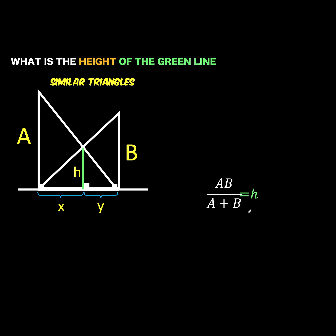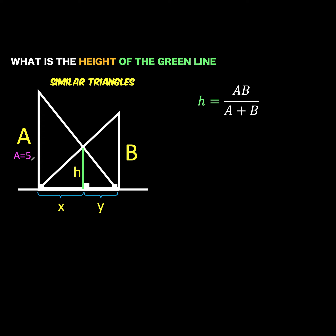Applying this formula to solve our problem: since a is given to be 5 and b is given to be 3, then h equals the product of 5 and 3, which is 15, over the sum of 5 and 3, which is 8. So the height of this green line is 1.875 units. This is the solution for the height of the poles.